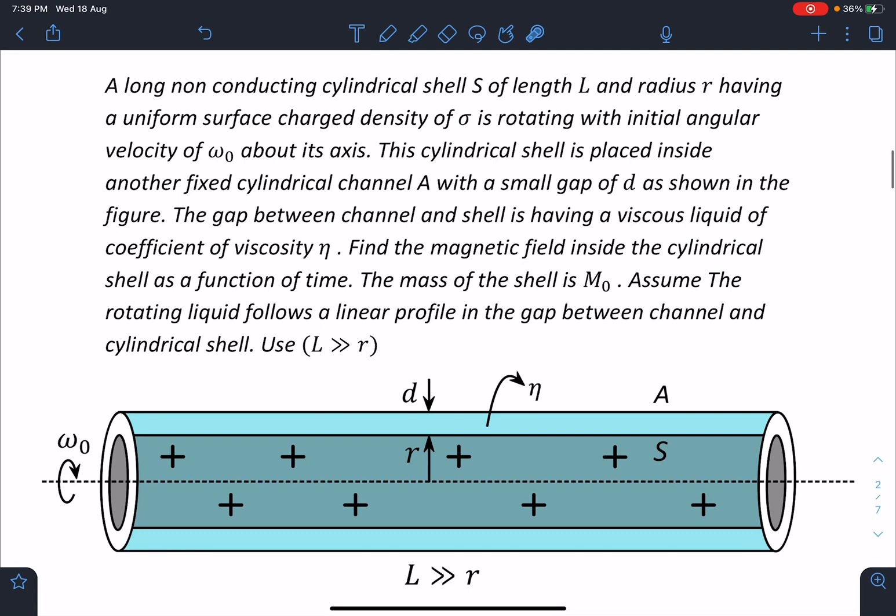Here is the problem: A long non-conducting cylindrical shell S of length L and radius r having a uniform surface charge density of σ is rotating with initial angular velocity of ω₀ about its axis. This cylindrical shell is placed inside another fixed cylindrical channel A with a small gap of d as shown in the figure. The gap between the channel and the shell is having a viscous liquid of coefficient of viscosity η.